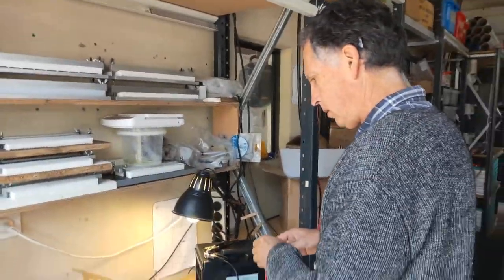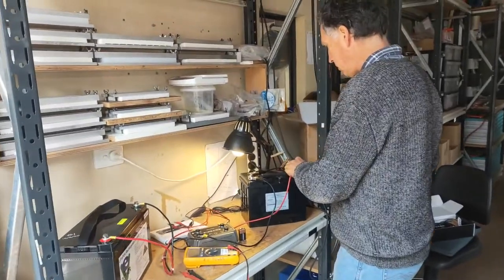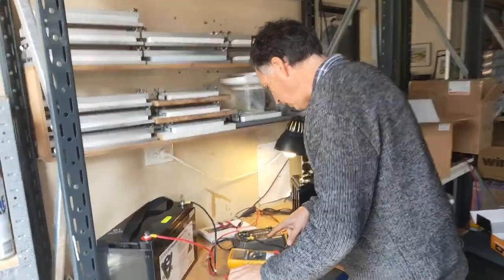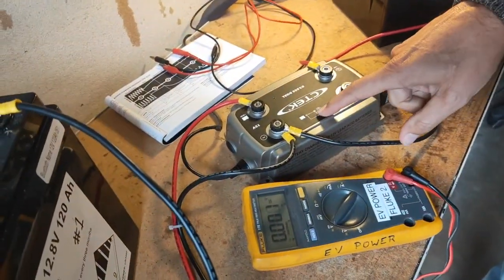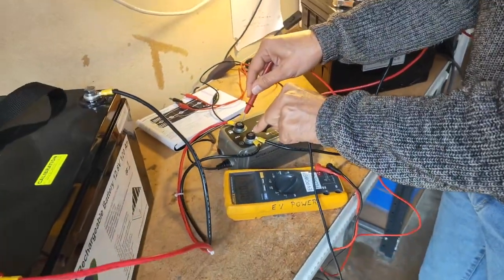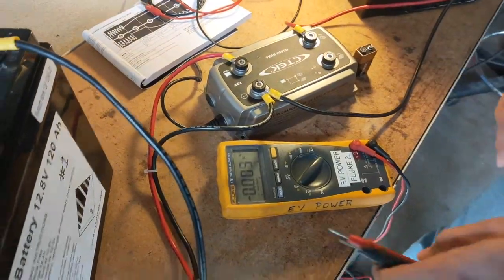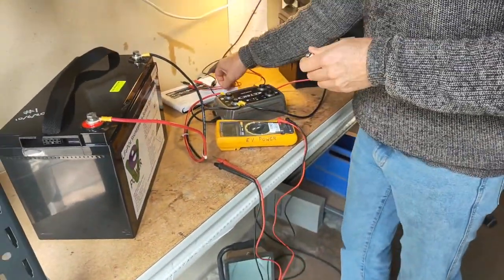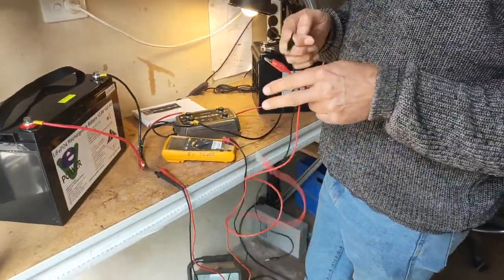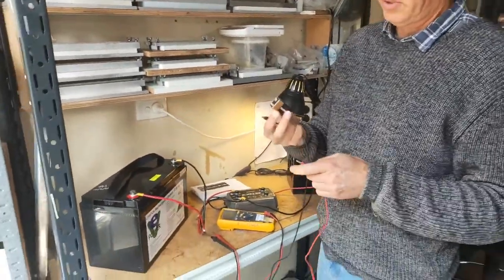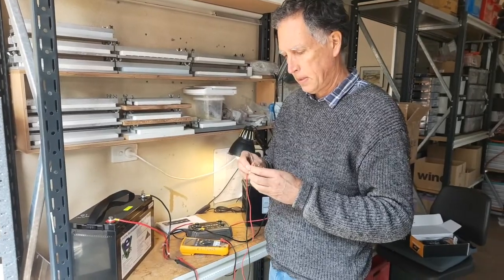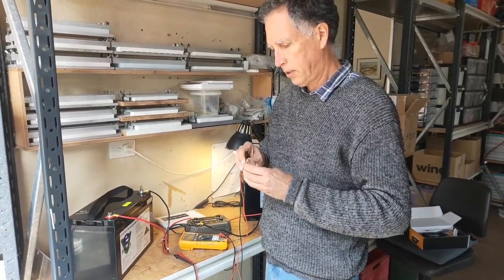So we'll connect up our CTEK charger. And as we expect, it's not charging. So there's still no output there. So what we're going to try and do is reboot the BMS on this battery by using one of these little nine volt batteries. This is highly experimental, we've never tried this before.